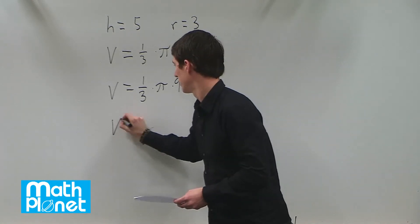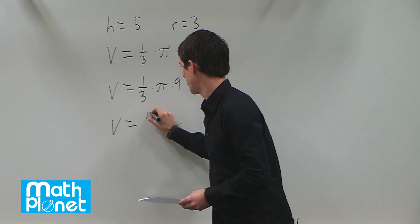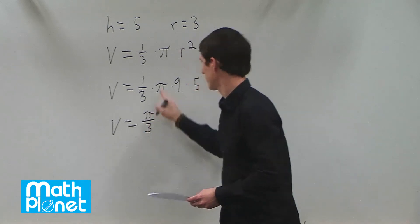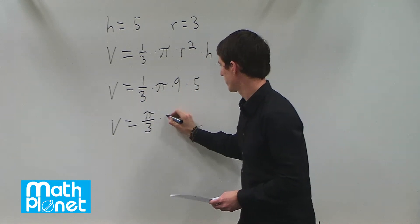We can multiply this out and we get pi over 3 times 9 times 5 which is 45.